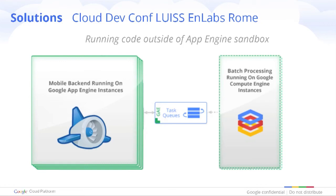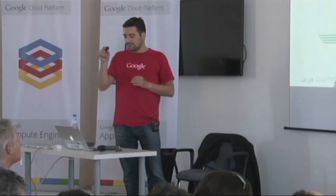You may have heard at I/O that we now do sub-hour billing on Compute Engine — that's very useful. If you have a really heavy video processing task that needs a heavy CPU server, the task can be generated by App Engine, executed by Compute Engine, the result sent back, and App Engine destroys the machines. All of that is integrated using Task Queues.